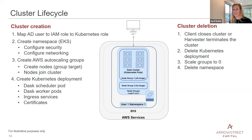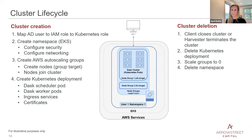This illustrates the cluster lifecycle when a user requests a new cluster. We start by mapping an AD user to an IAM role and a Kubernetes role. We then create the namespace container with security and networking, use AWS autoscaling groups for nodes, allocate those nodes to the namespace, and create our Kubernetes deployment including ingress certificate services. Deletion is triggered by either closing the cluster or the harvester terminating it after an inactive period, deleting all resources — deployments, nodes, node groups, and the namespace.